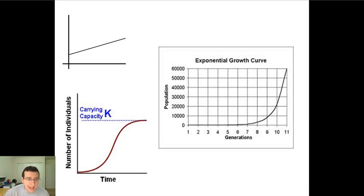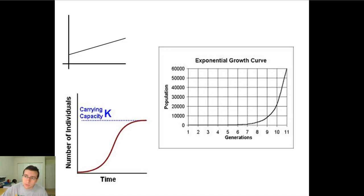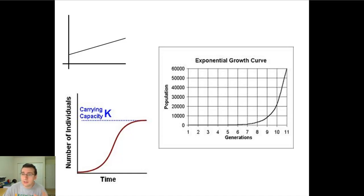Linear growth is when you add a constant number in every generation. Exponential growth is when you multiply the current numbers by a constant factor with each generation. And logistic growth is when you take into consideration the fact that populations can't grow either linearly or exponentially forever, because eventually they will hit a limit to what the ecosystem can support, which is called the carrying capacity.